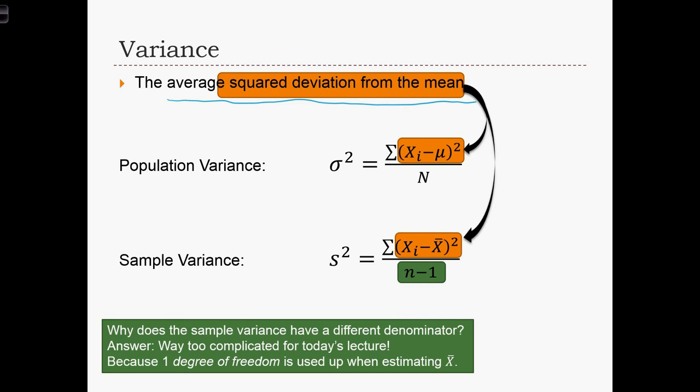We're going to differentiate between the population variance and the sample variance. Mostly this is just a naming convention. We're going to use lowercase sigma squared to refer to the population variance, and lowercase s squared to refer to the sample variance.